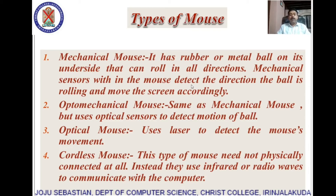Another type of mouse is the optical mouse, which uses a laser to detect mouse movement. The cordless mouse does not need to be physically connected to the computer at all; instead, it uses infrared or radio waves to communicate with the computer.